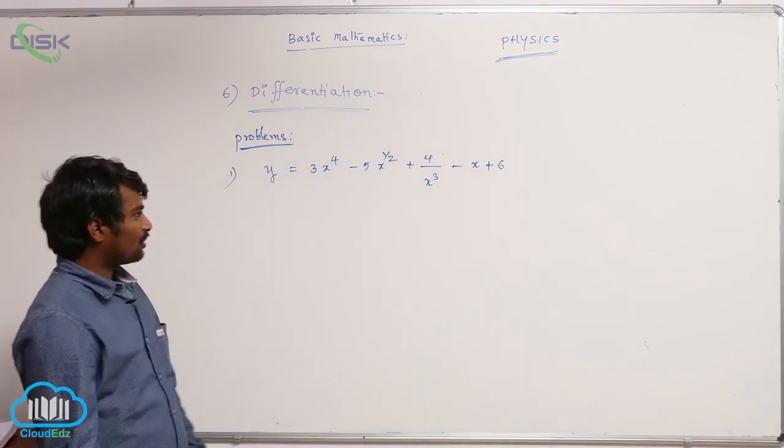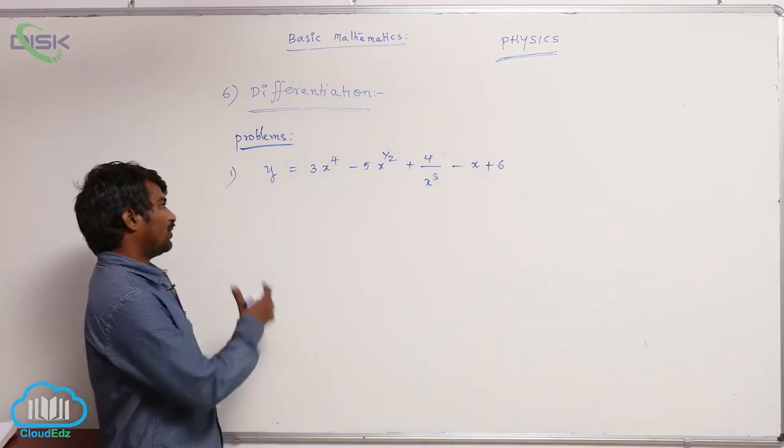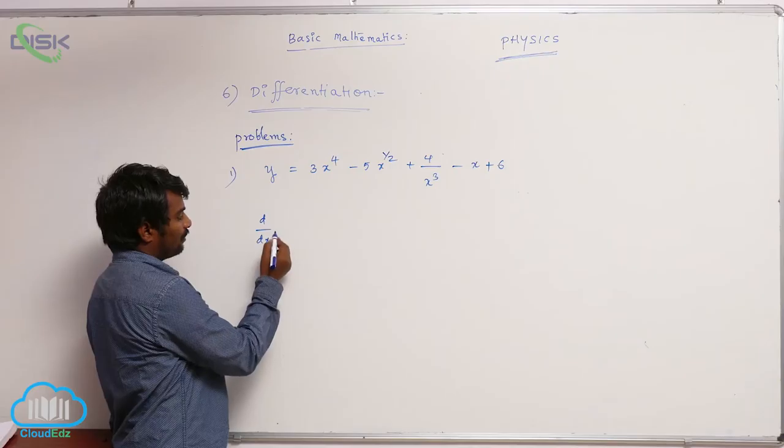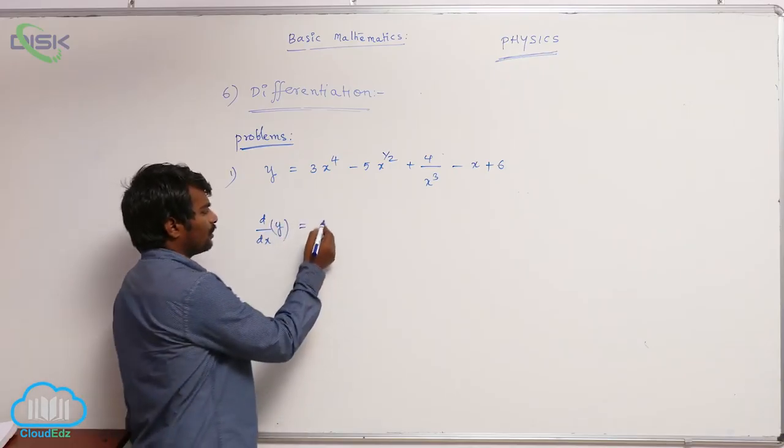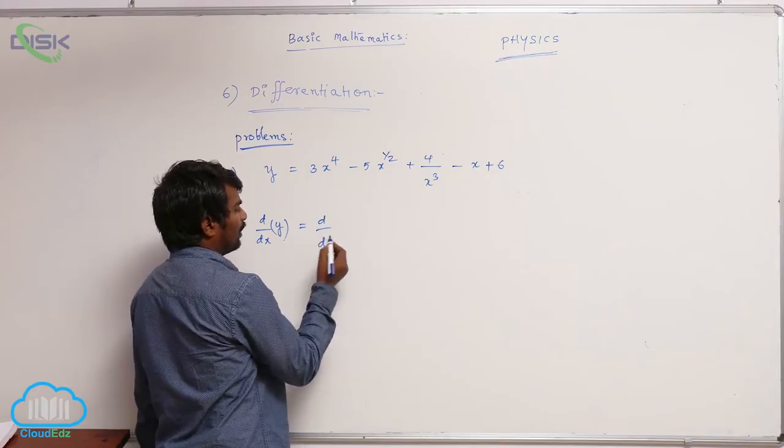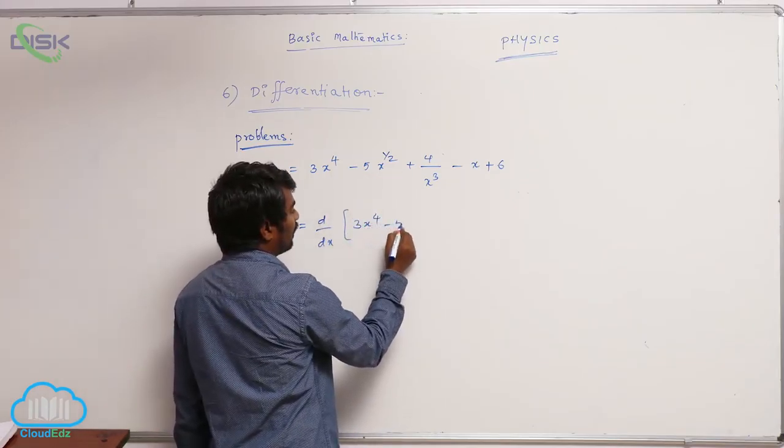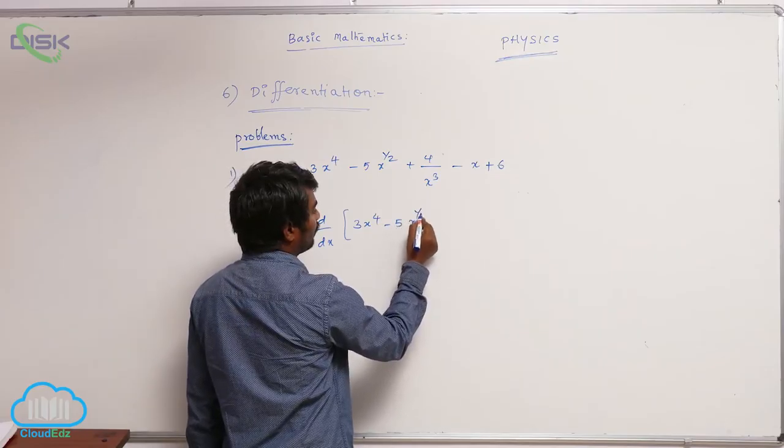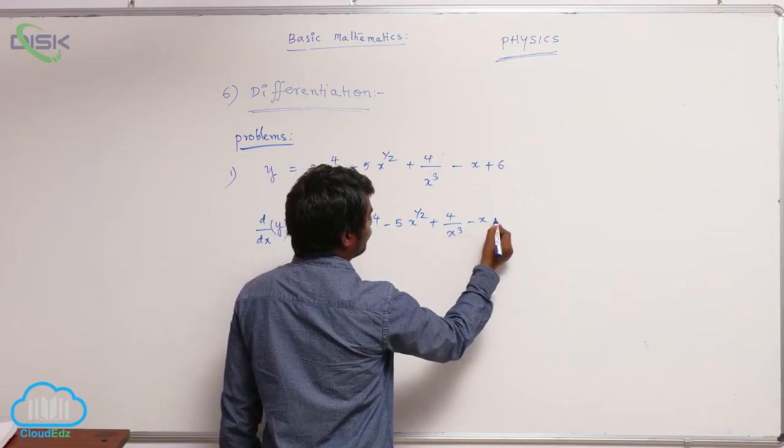Let us go for differentiation of this function. I am differentiating with respect to x on both sides. So dy/dx equals d/dx of 3x^4 minus 5x^(1/2) plus 4/x^3 minus x plus 6.